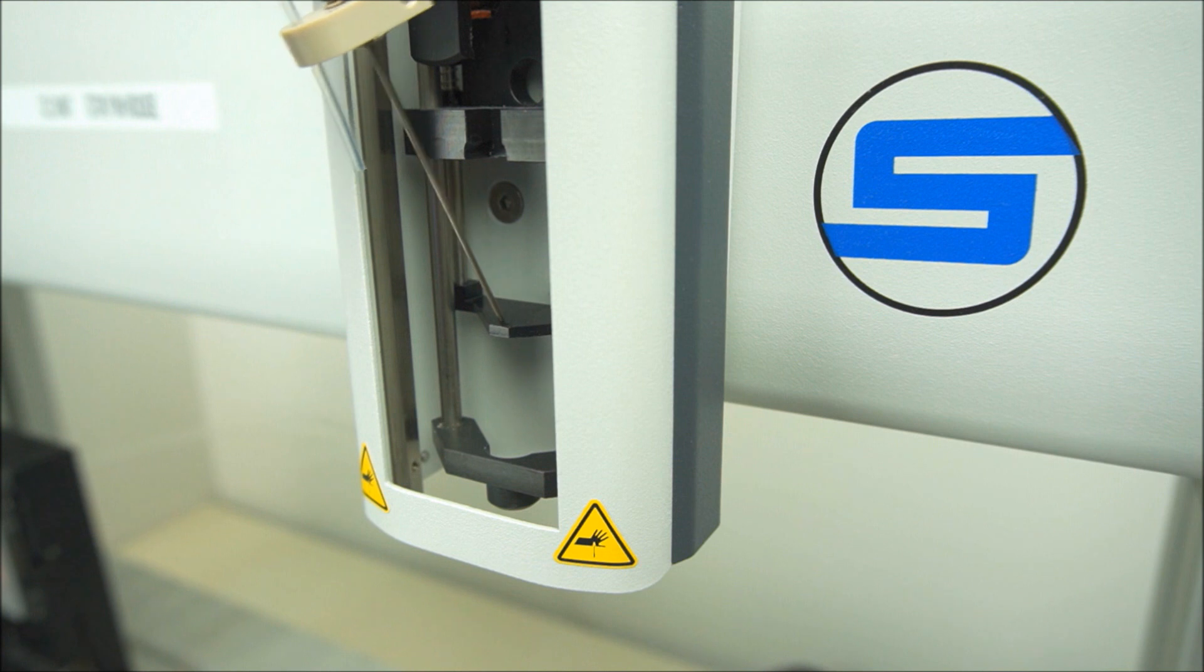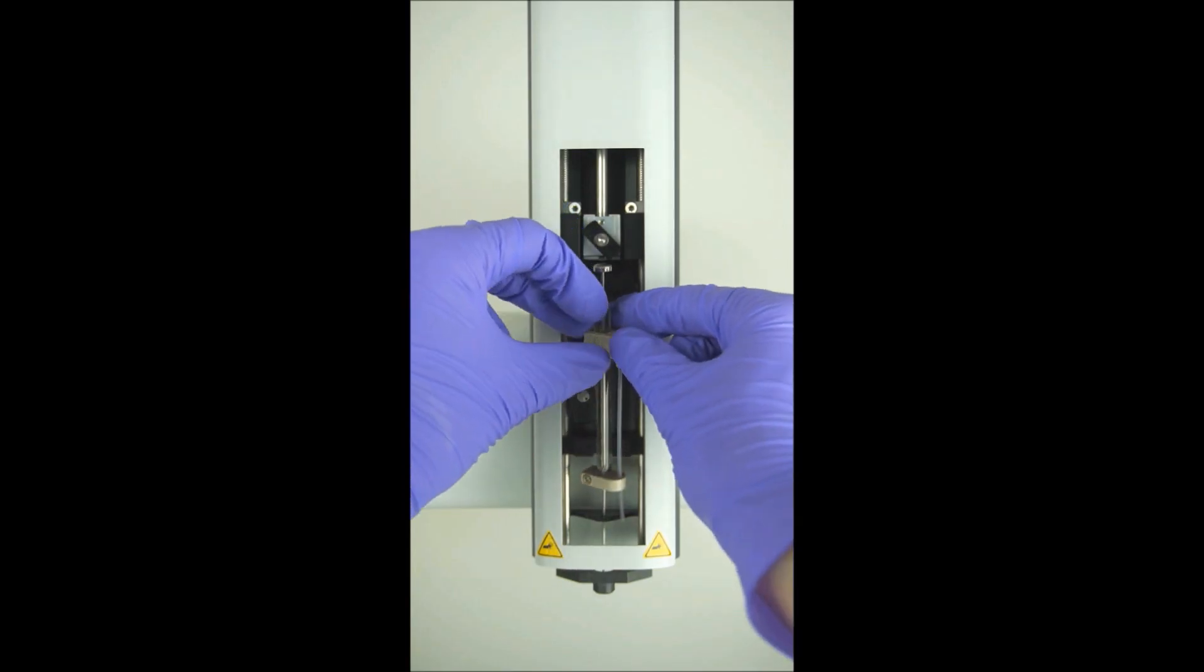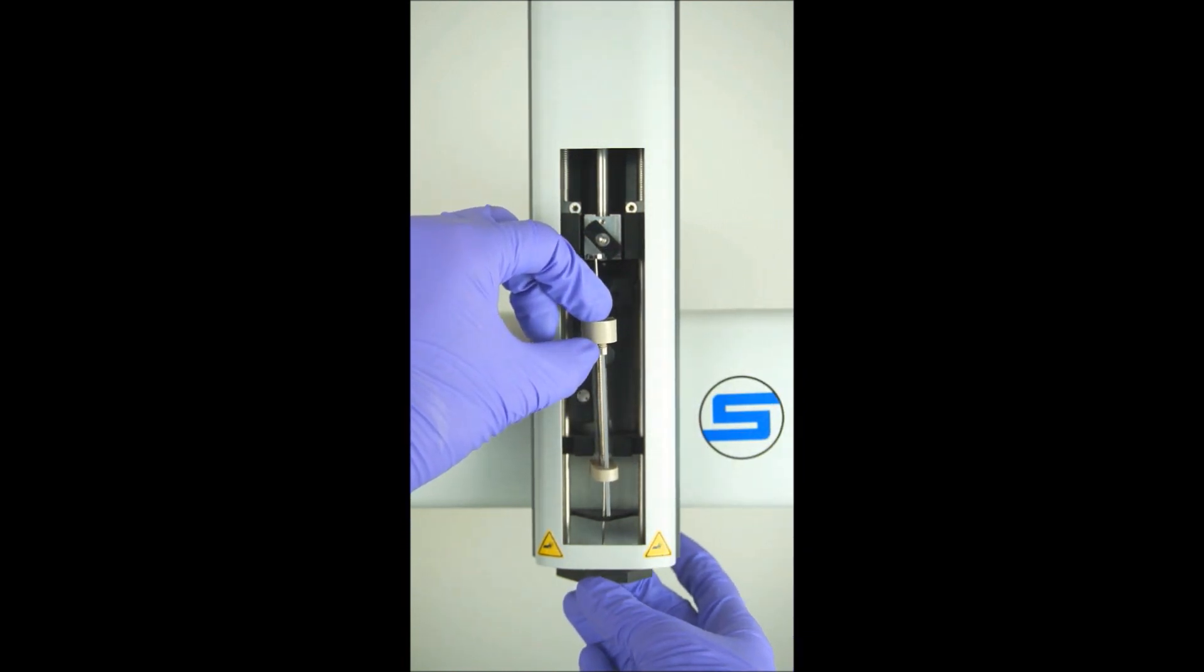To install an auto sampler syringe, thread the needle through the upper needle guide down to the top of the lower guide. Align the plunger with the upper clamp and open.